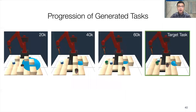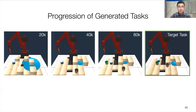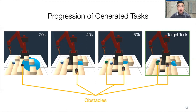At the heart of our approach, a task generator learns to create new tasks via a black-box procedural generation module by adaptively sampling from the parameterized task space. The policy learns from trajectories collected from both the target task and the generated tasks during training. A task discriminator learns to estimate the similarity between the two task sources based on collected trajectories. Our key insight is that learning progress can be jointly defined by how similar the generated tasks are to the target task and how well the policy can solve the generated tasks.